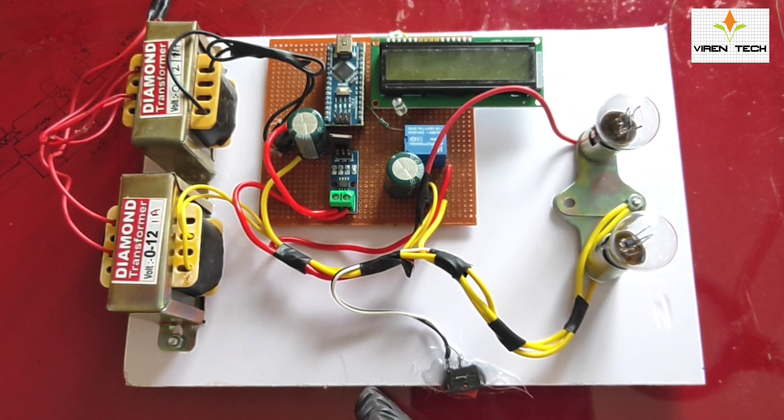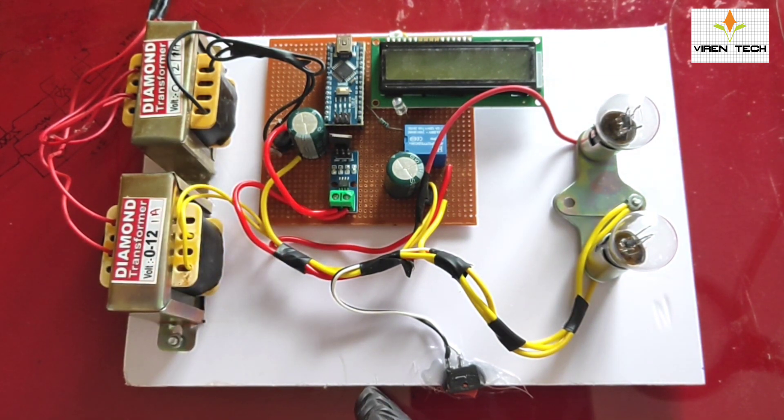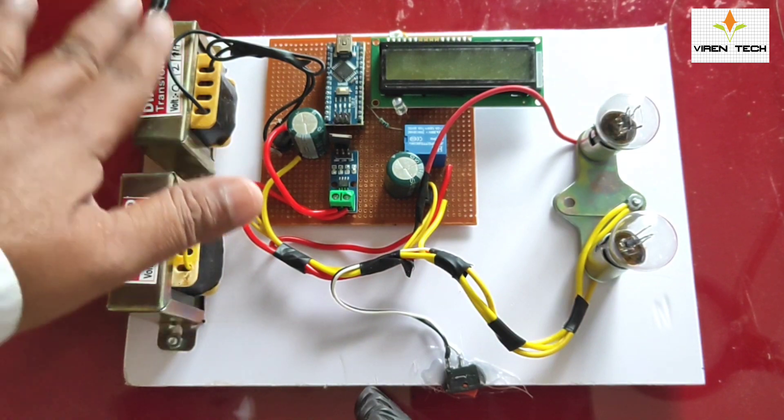When we turn on the second load and the load power exceeds 5 Watt which is measured by this current sensor and voltage sensor, the load becomes excessive to one of the transformers.